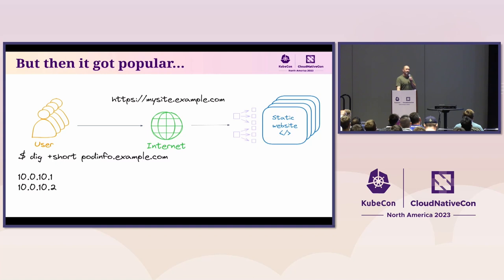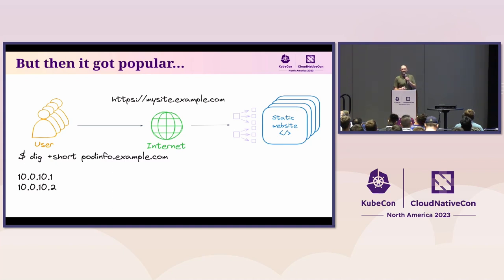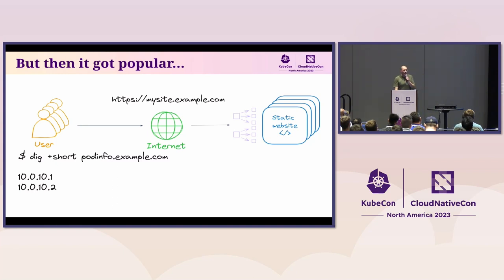It got so popular, and they also wanted redundancy. They deployed their static website across four pods — because if one pod died, they wanted people to still access it. So they put two load balancers in front, giving them two IP addresses. One name, two IP addresses — the DNS response says both are valid, so the client can use either.